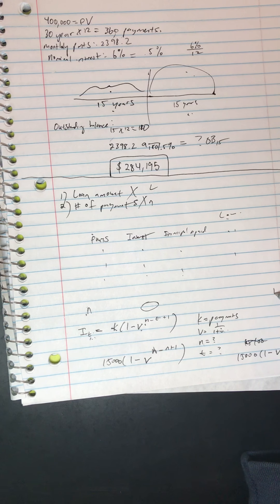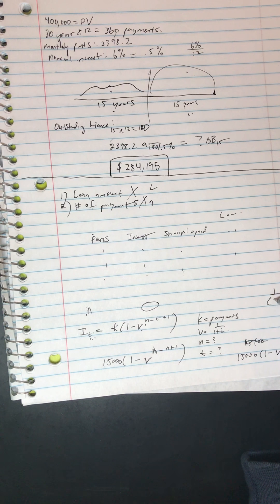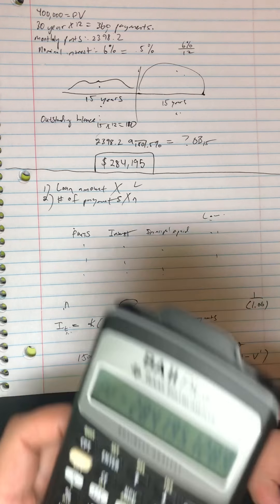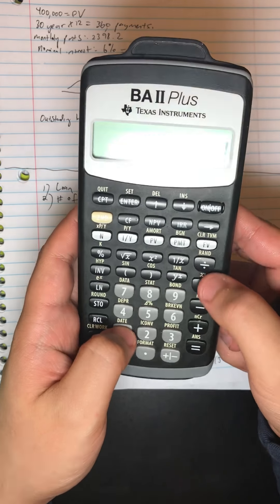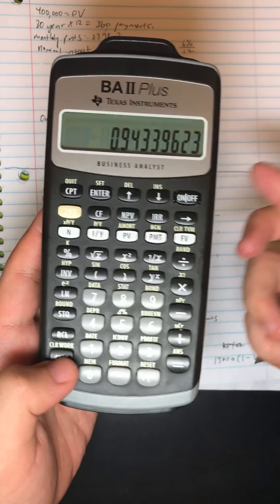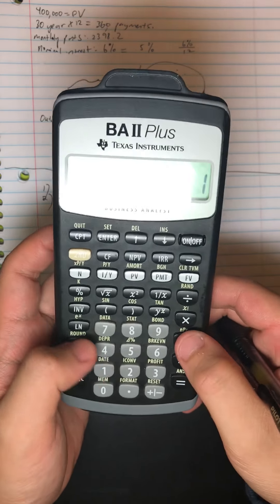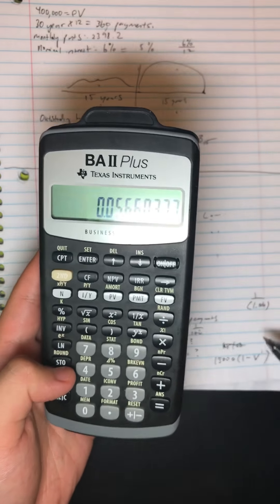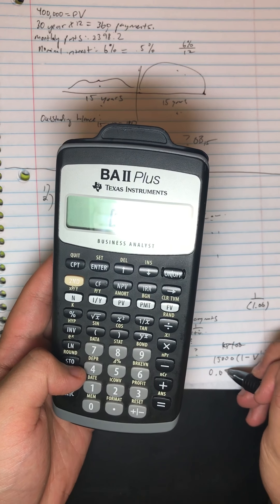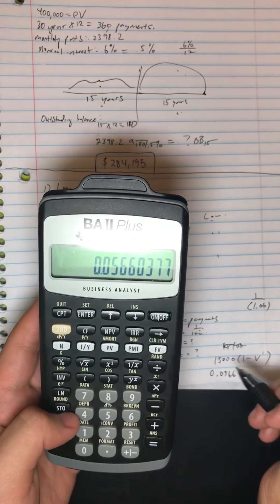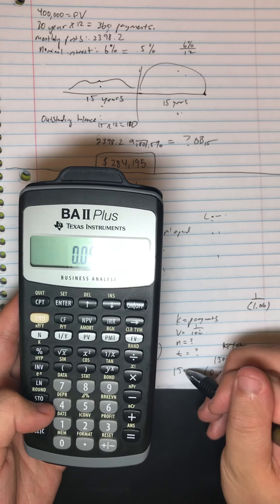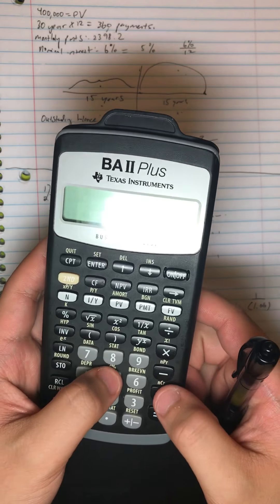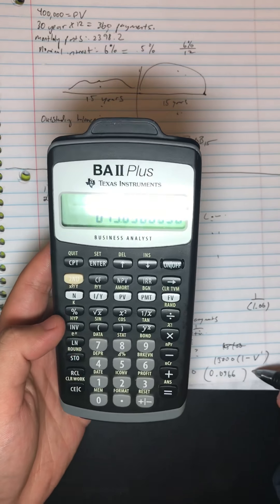We have that it's 1 over 1.06, which we would get 0.943, and we subtract that by 1 to get 0.0566.